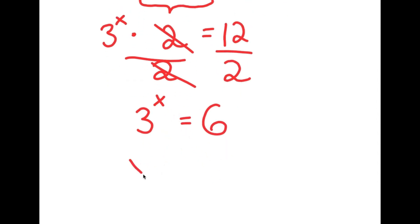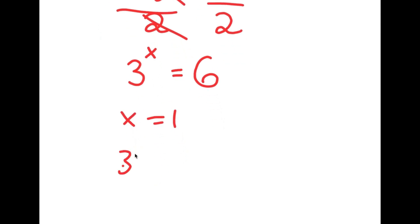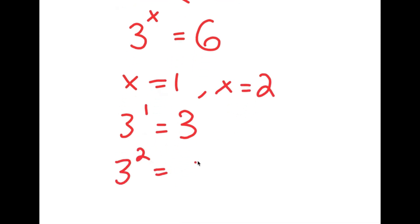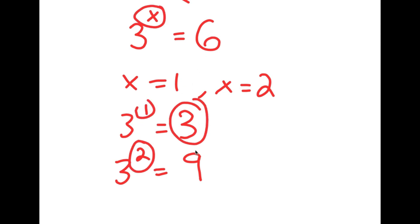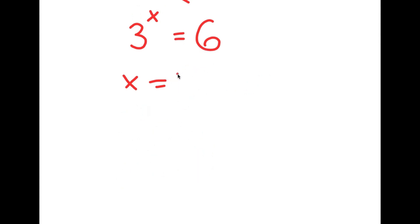If we plug in x equals 1, we get 3 to the power of 1, which is equal to 3. And if we plug in x equals 2, we get 3 to the power of 2, which is equal to 9. So we know that the value of x has to be somewhere between 1 and 2, because 6 is between 3 and 9, meaning x is going to be a decimal value. To find the exact value of x, we're going to have to use logarithms.